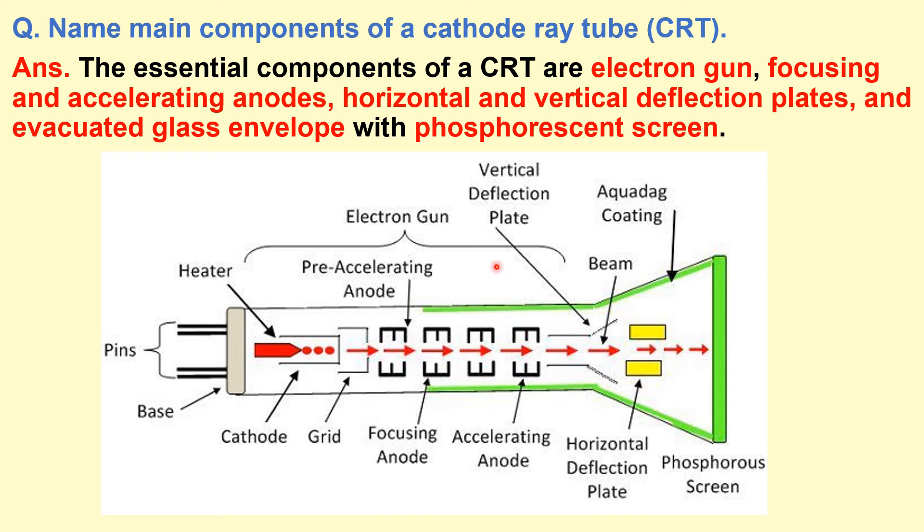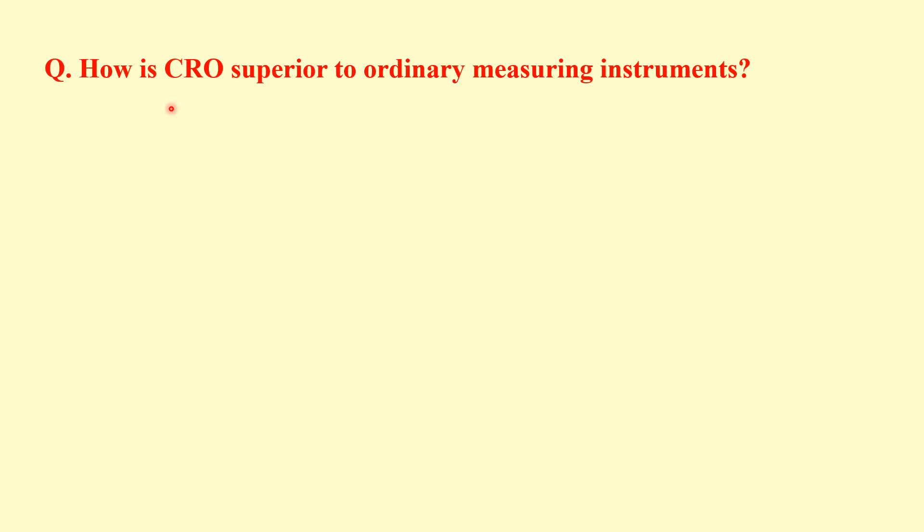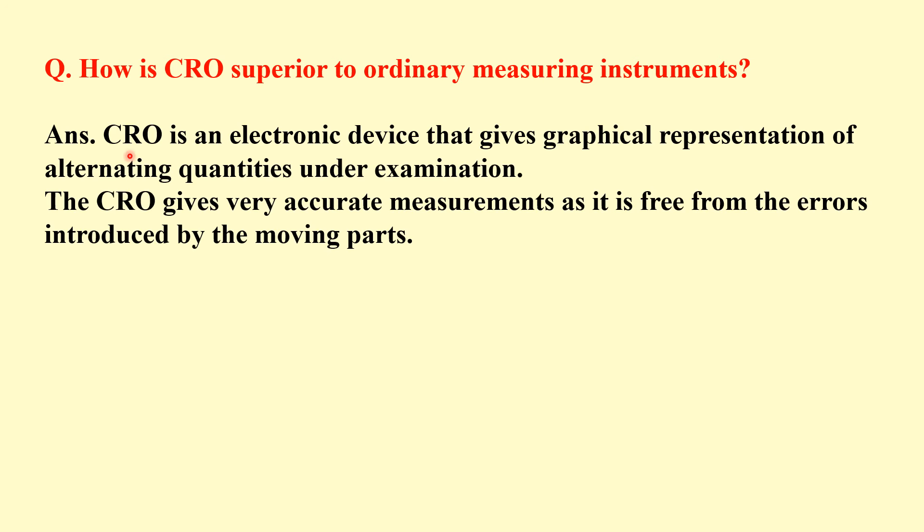So these are the main components of cathode ray tube. So we will discuss in the next questions about the different components. Next question is how is CRO superior to ordinary measuring instruments? It is a device which gives the graphical representation of the alternating quantities under examination. And it gives very accurate measurements and free from the errors because there are no moving parts during this measurement.